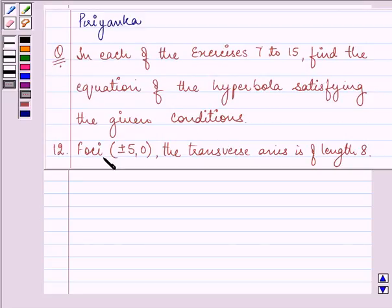Here the foci is given to us as plus minus 5 comma 0, and the transverse axis is of length 8.